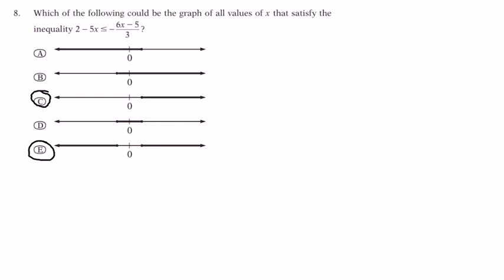So, that leaves us choices C and E. Now, the question is, how to distinguish between choices C and E. Well, let's plug in something like x equals negative 5. If x equals negative 5 satisfies the inequality, then choice E is the winner. If x equals negative 5 doesn't satisfy the inequality, then choice C is the winner.